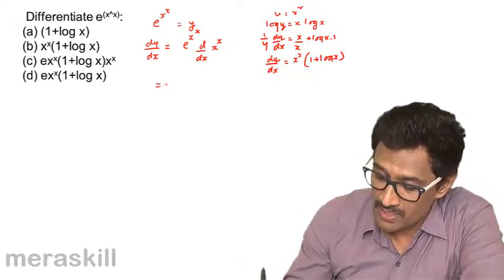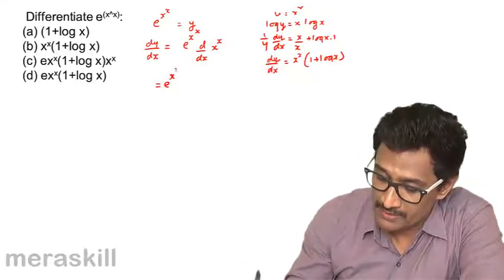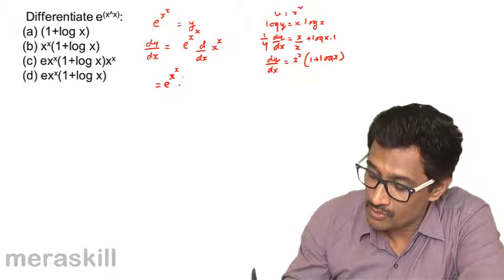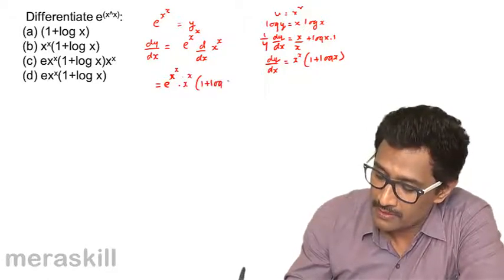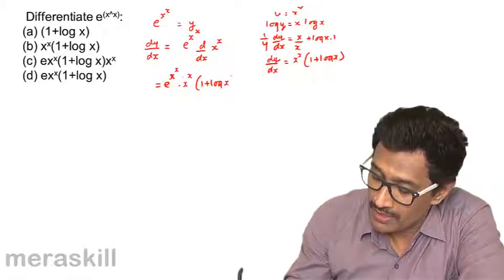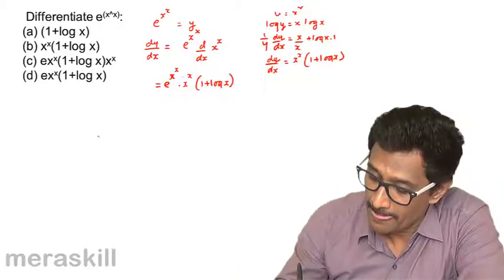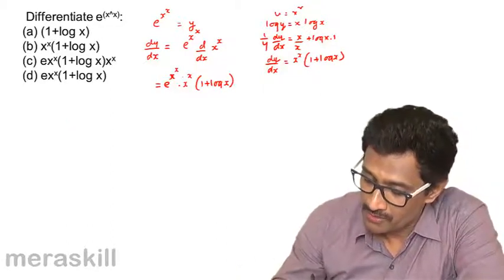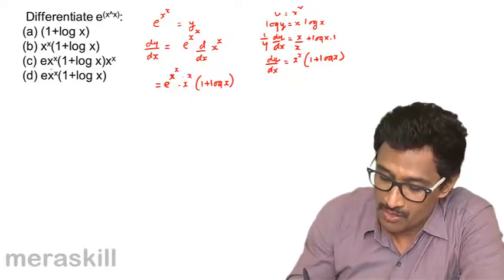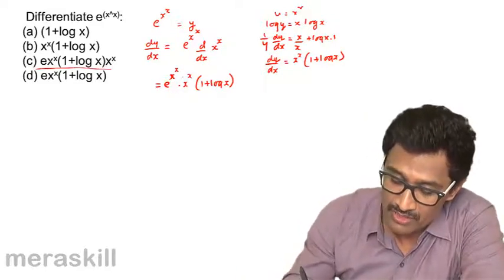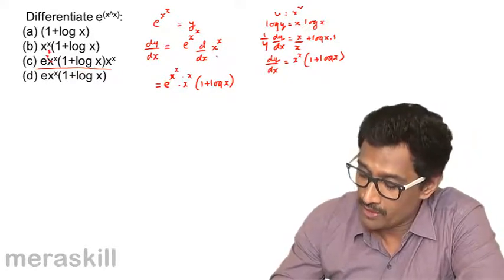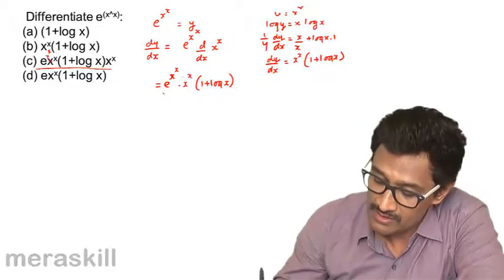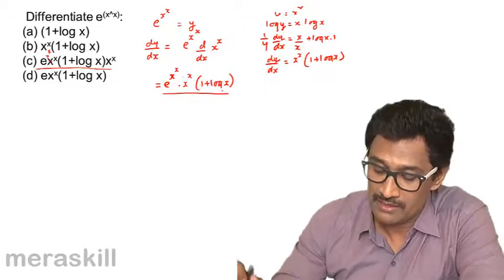Putting it all together: dy/dx equals e^(x^x) times x^x times (1 + log x). Among the options, this is option C: e raised to x^x, multiplied by x^x, multiplied by (1 + log x).